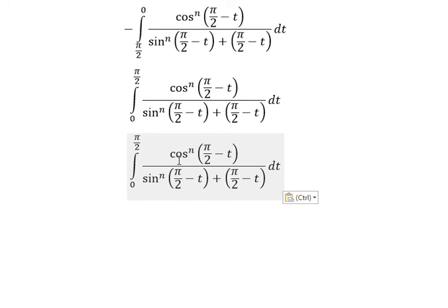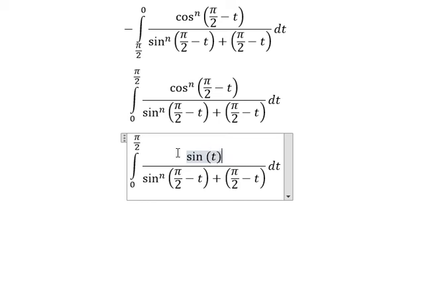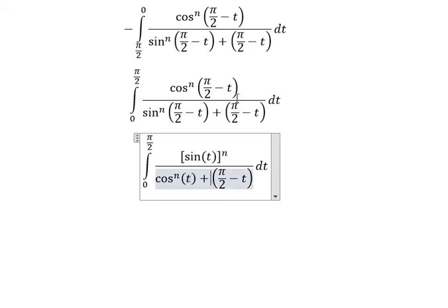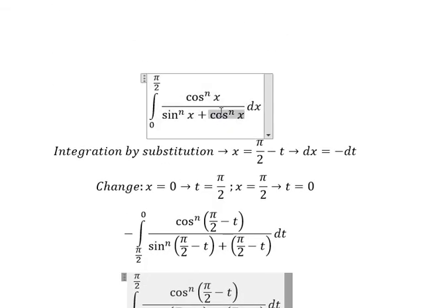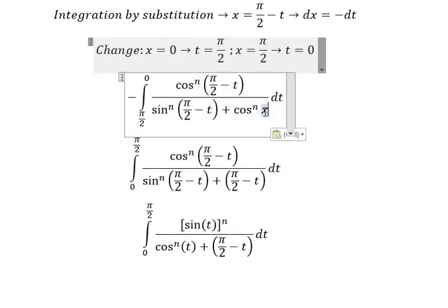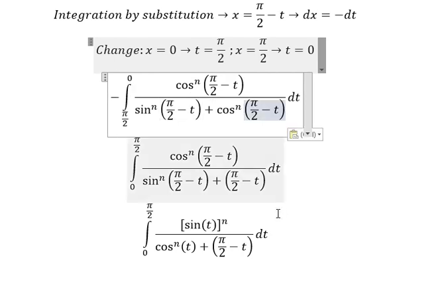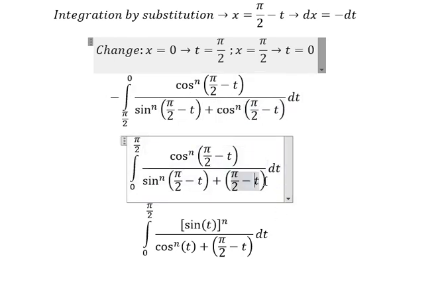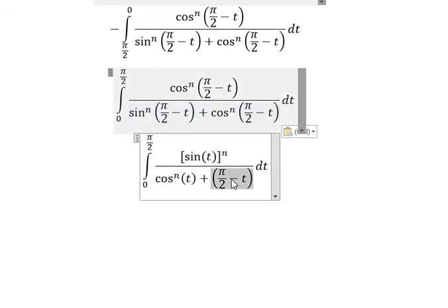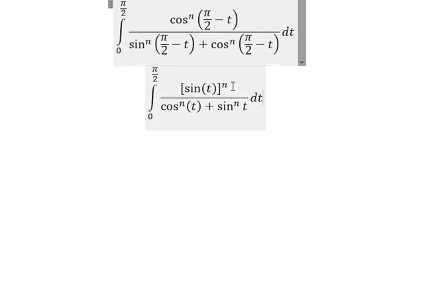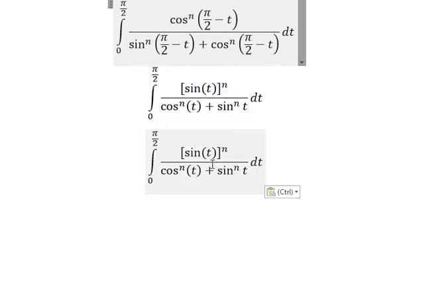Next, cos(π/2 - t) we can change for sin(t) to the power of n. Similar for this one. So this we change for cos(t) to the power of n. This one we change for cos(t) to the power of n. And t we need to change back for x.